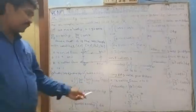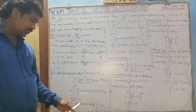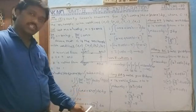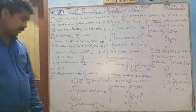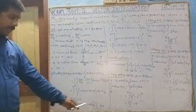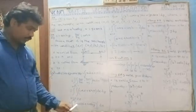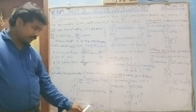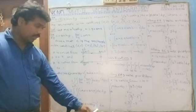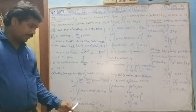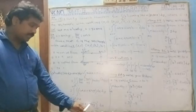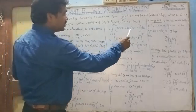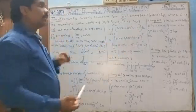Integrating first with respect to y: integration of cos(x) gives cos(x)·y, and integration of sinh(y) gives cosh(y). Applying the limits from 0 to 1: putting y equal to 1 gives cos(x) plus cosh(1), minus putting y equal to 0 gives 0 plus cosh(0). cosh(0) is 1. So we get cos(x) plus cosh(1) minus 1.